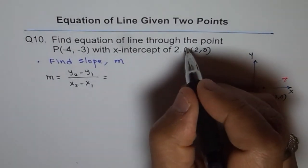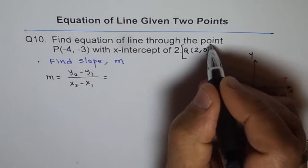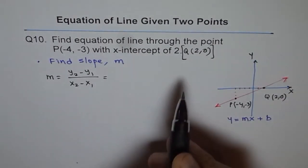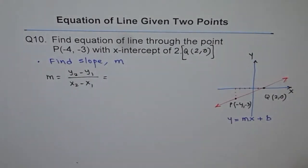So we will write this as point Q as (2, 0). It helps to write so that we know what our x and y values are. As you know, this is our second point. So we will write this as x2, y2. And this is our first point. So we will write this as x1, y1.